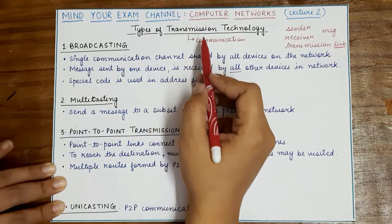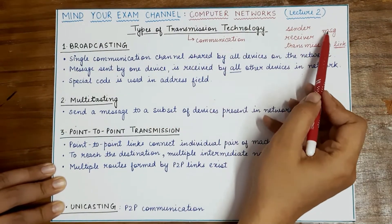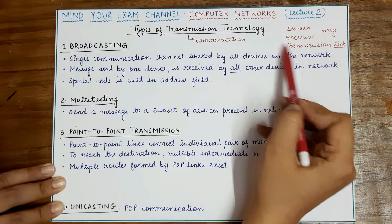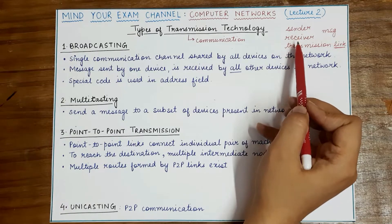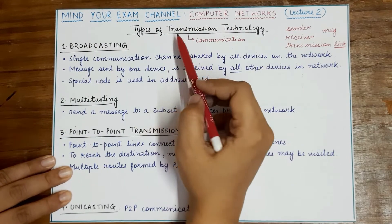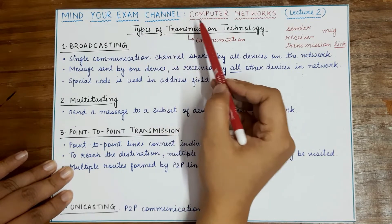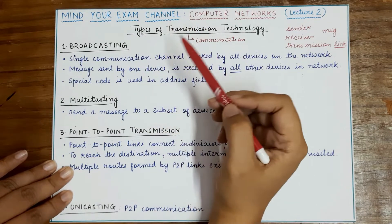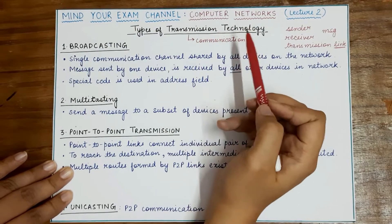What we are studying today is: when a sender is sending some message, to how many receivers that message is being sent and by how many receivers it is being received. That defines a classification known as the classification of computer networks on the basis of transmission technology.